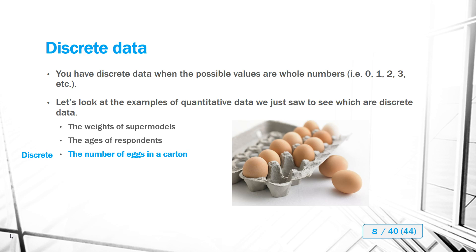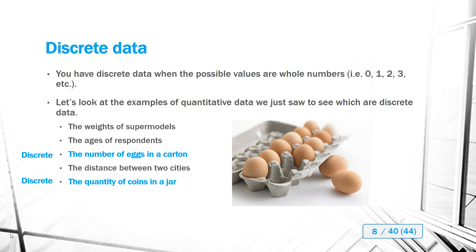The number of eggs in a carton is discrete data because you count whole eggs — no partial eggs. The distance between two cities is not discrete because you measure parts of miles or kilometers along with whole units. The quantity of coins in a jar is discrete data because you count whole coins, not partial coins — these are whole numbers.